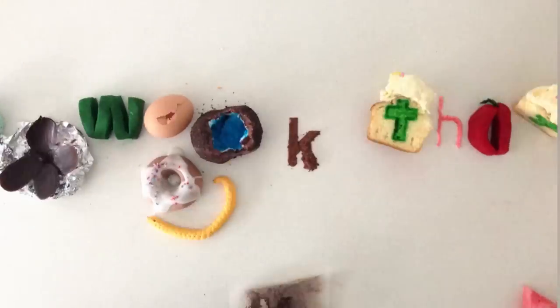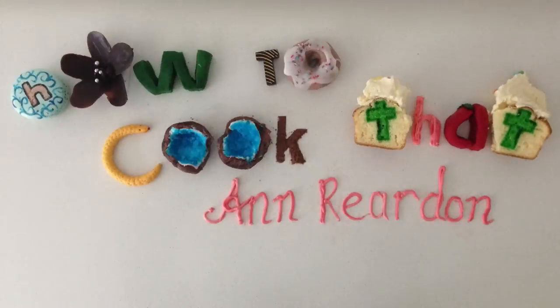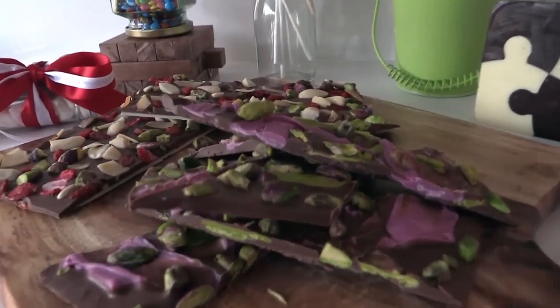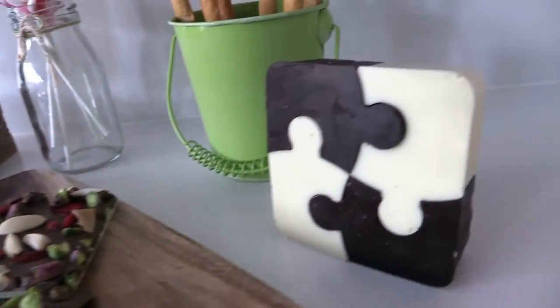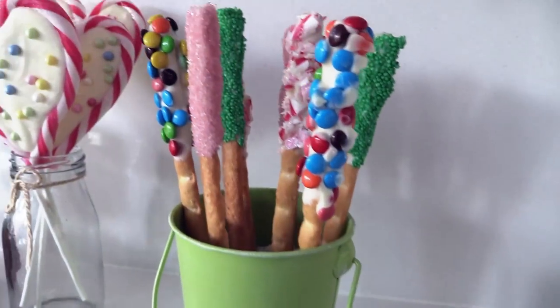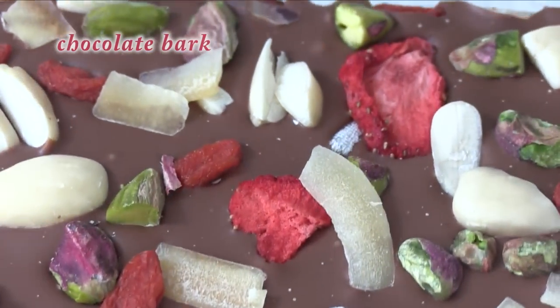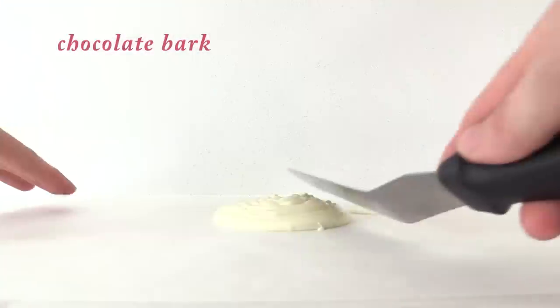Welcome to How To Cook That, I'm Anne Reardon and today we are going to make five different gifts that you can give away to people who love food, which is pretty much everyone. The first one we're going to make is chocolate bark. This is such an easy one to make and it's well loved by everyone who receives it.